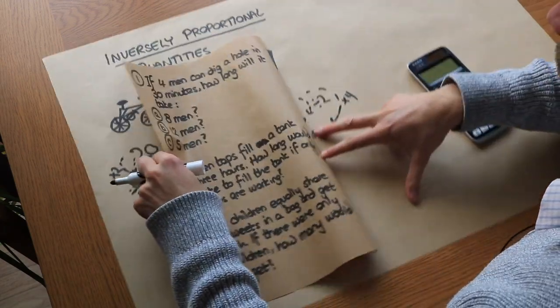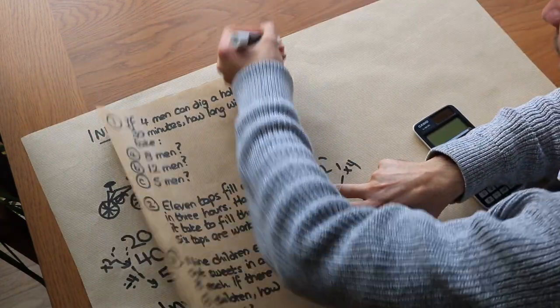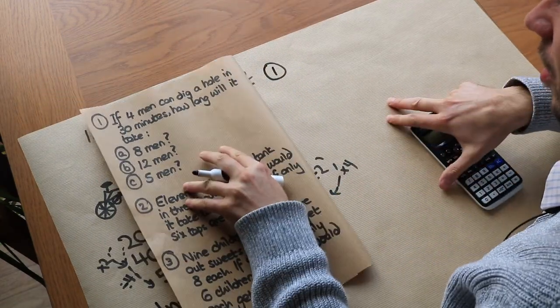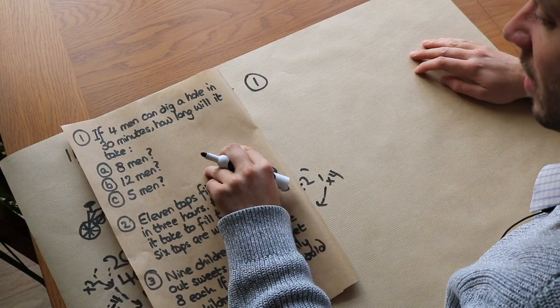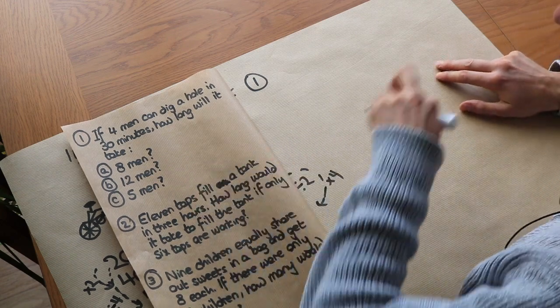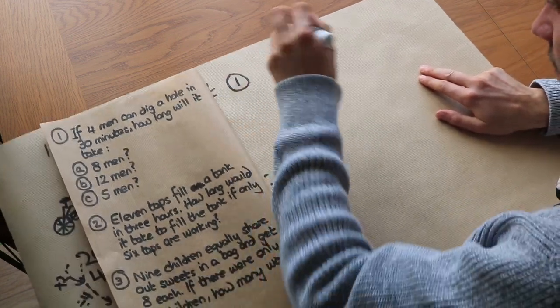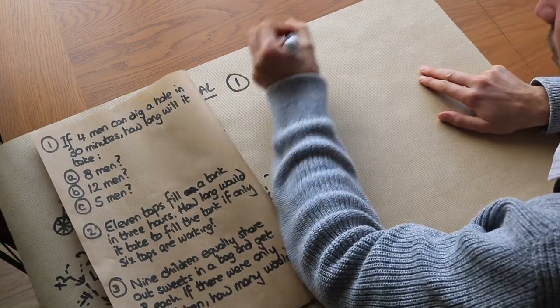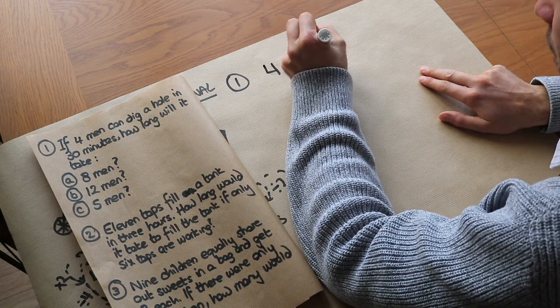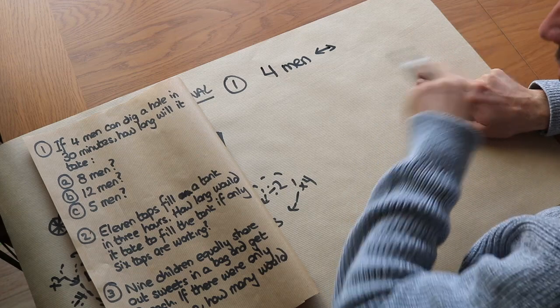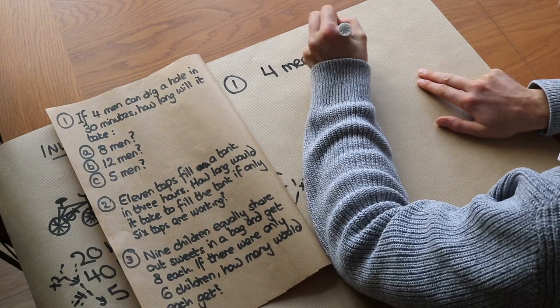Now let's use that to solve these particular problems here. If 4 men can dig a hole in 30 minutes, how long will it take 8 men, 12 men, and 5 men? So let's just write it down. In the previous video on directly proportional quantities, I like to write the two things like this: 4 men, and then I'll put an arrow to say there's some proportional relationship, and we've got 30 minutes.